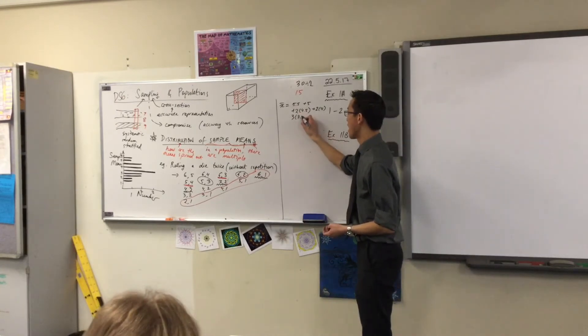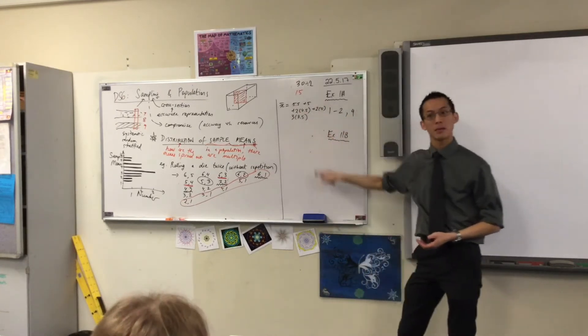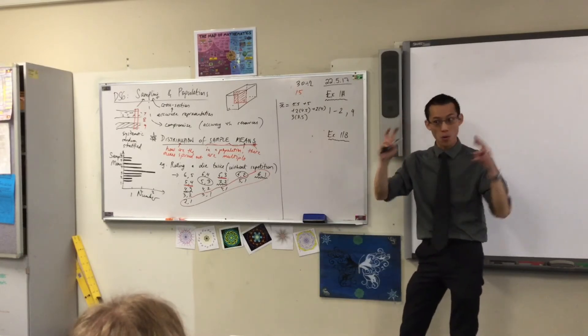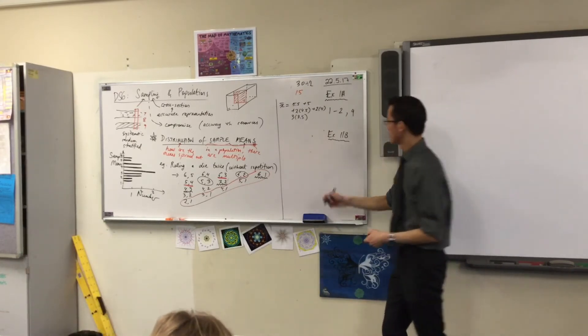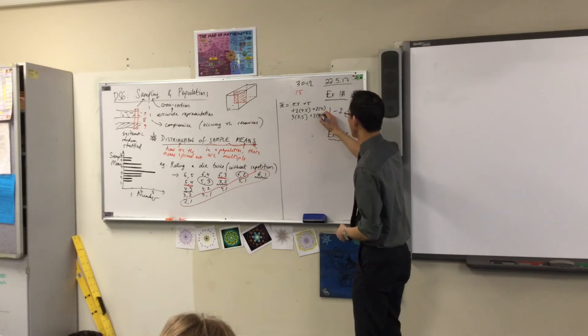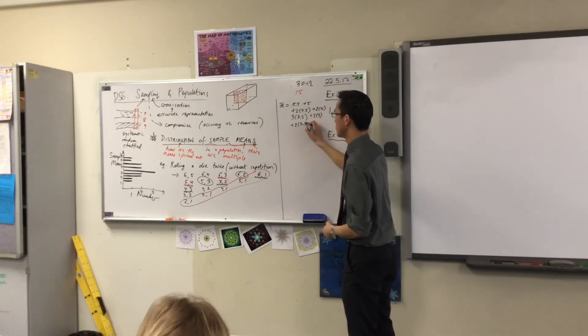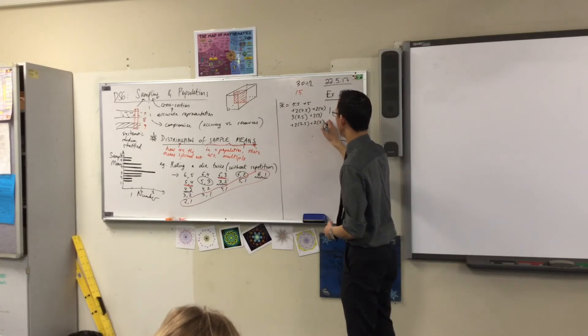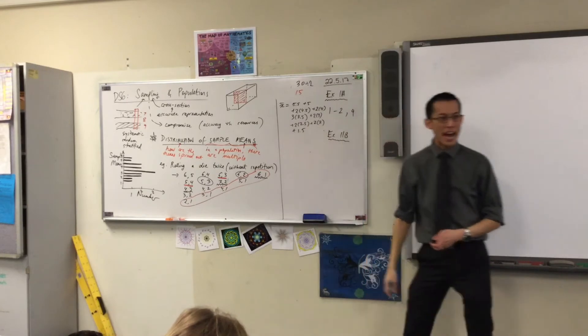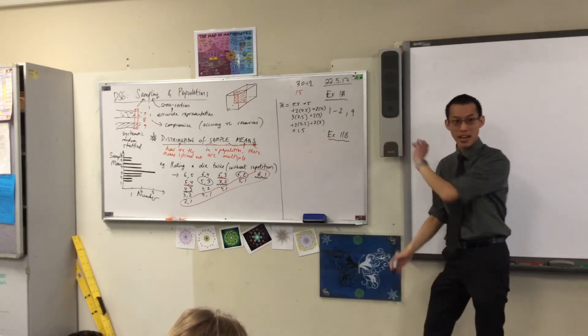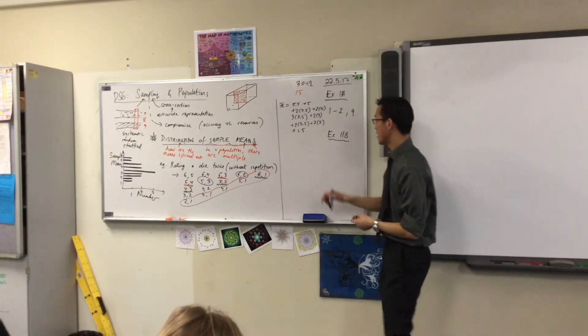So I'm going to multiply that one by three, and then I'm going to keep going. This is my way of adding up all the means. Does that make sense? So I'll finish off what I've got.